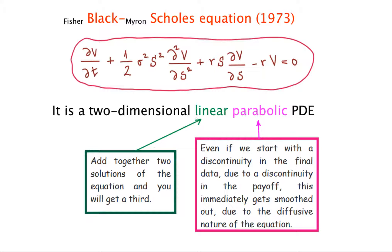Being linear basically means the following: if V1 is a solution and V2 is a solution, then V1 plus V2, giving V3, will also be a solution to the Black-Scholes equation. That's the implication of being linear.